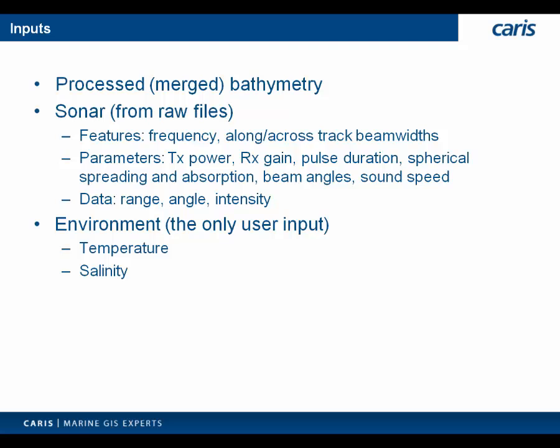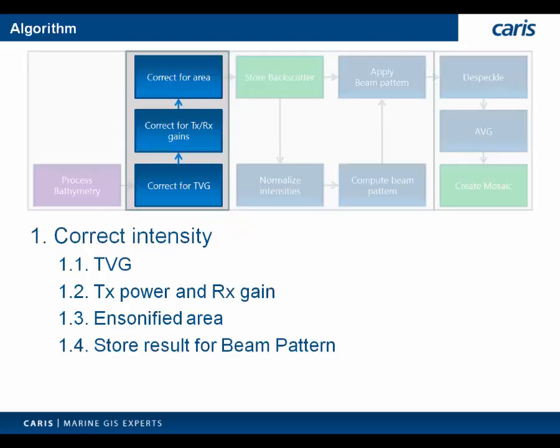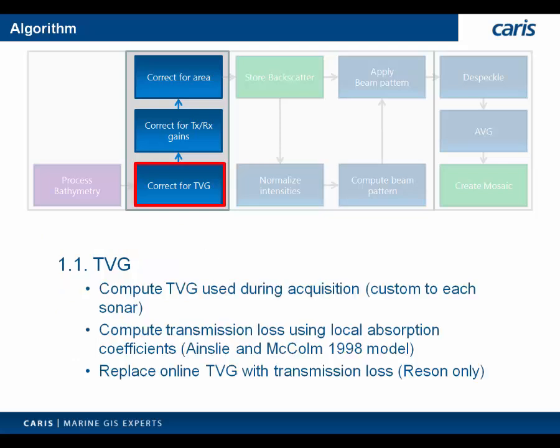These numbers are fairly insensitive, so a simple average for the area at the time of survey is all you need, and it's really only absolutely necessary if conditions change drastically day-to-day, or if you have data from more than one sonar that you'd like to mosaic together. The first thing we apply are the standard intensity corrections for time-varying gain, transmit power and receive gain, and ensonified area. For Reson systems, they compute a TVG correction in real-time and apply it to the stored backscatter. We compute the same TVG and back that out, then apply our own transmission loss correction using the user-provided coefficients for absorption. At the moment we don't do the same for Kongsberg data, as those corrections are more complicated to back out.